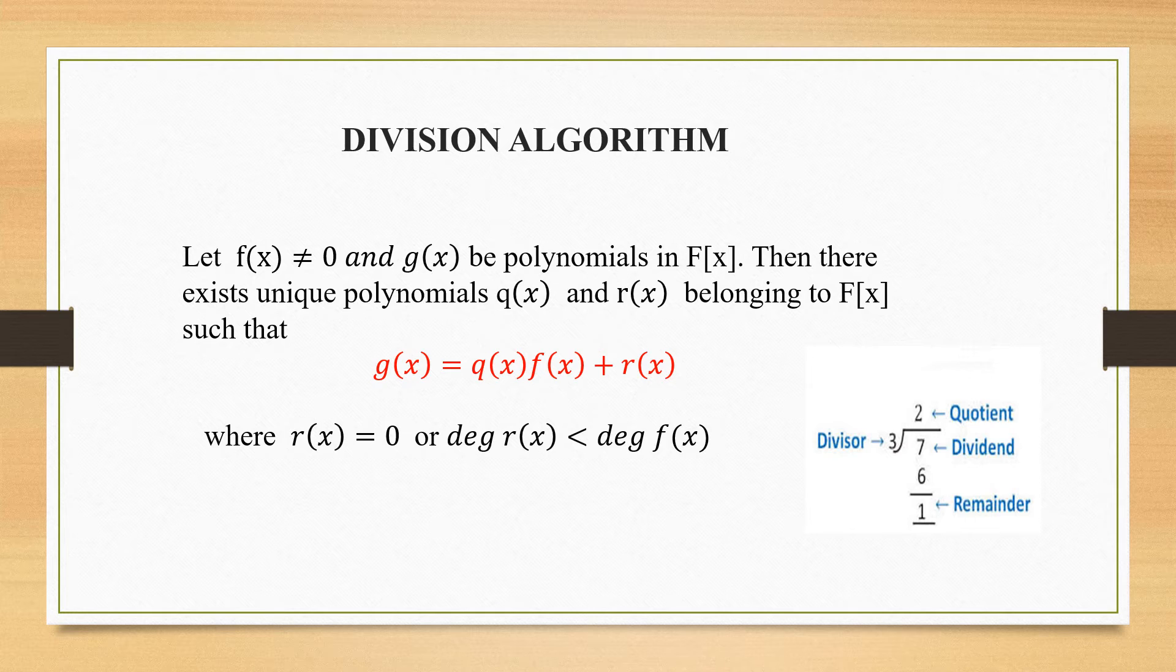Let me explain this division algorithm by a simple example. Now let me consider 7. I am going to divide this 7 by 3. So how many times will it go? 2 times. 3 into 2 will give you 6. So what is your answer? Remaining answer is 1.